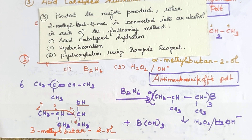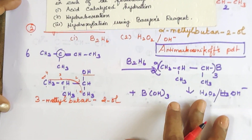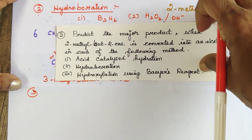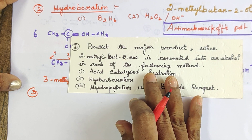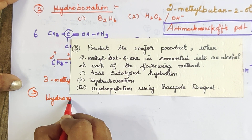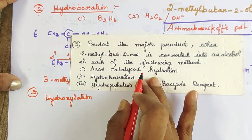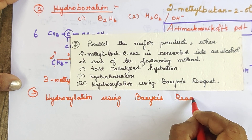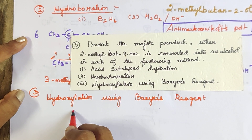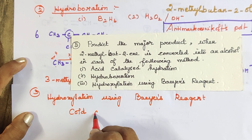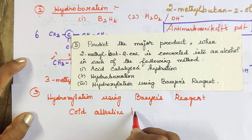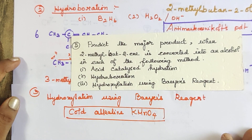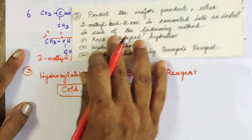The third reaction is hydroxylation using Baeyer's reagent. Baeyer's reagent is cold dilute alkaline KMnO₄. This reagent causes syn-dihydroxylation of the double bond, adding two OH groups across the double bond.